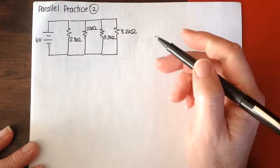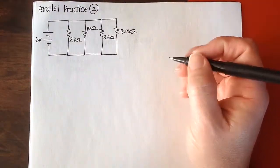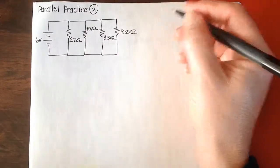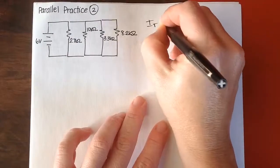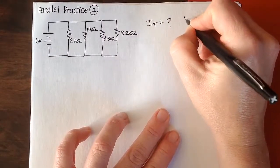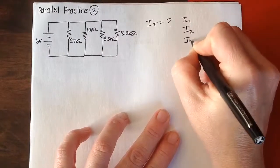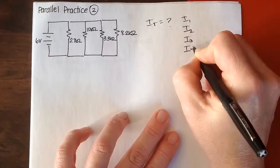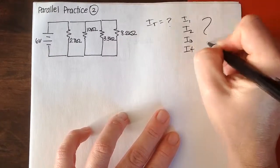Let's start by finding the total. We want to find the total current, and we also want to find I1, I2, I3, and I4 in each of the branches.